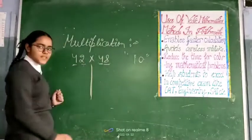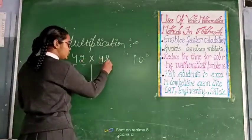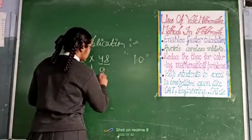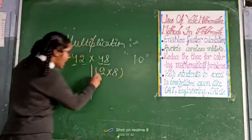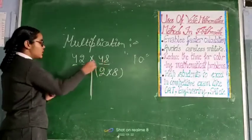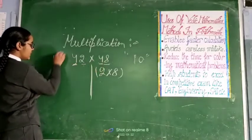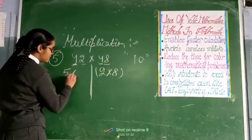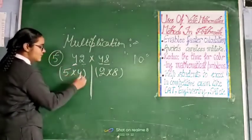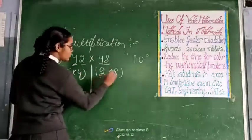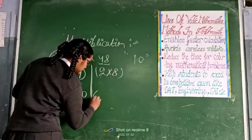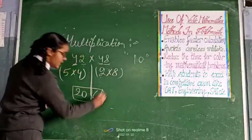And draw a line between them and multiply 2 into 8. And then multiply 4 into 4. Its next digit is 5 here. Then multiply 5 into 4. 5 into 4 makes 20. 2 into 8 means 16. And this is your final answer.